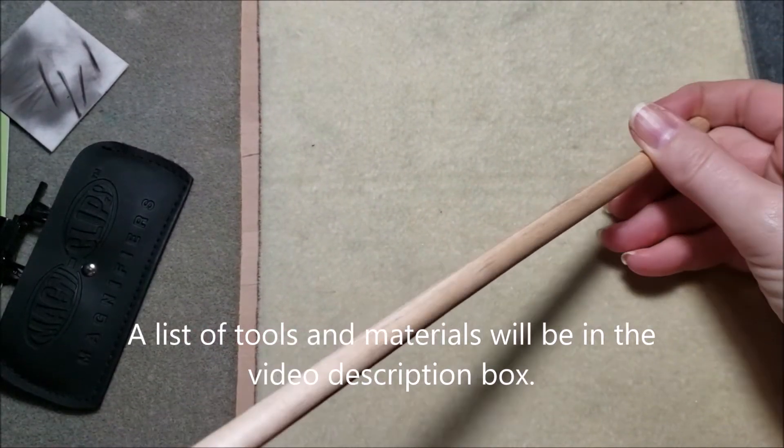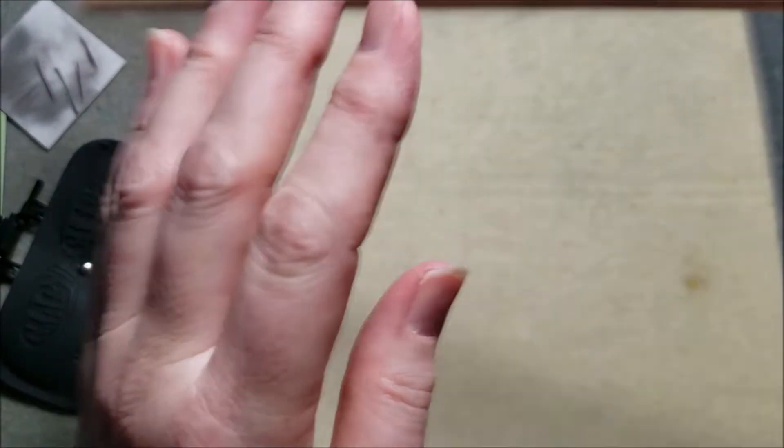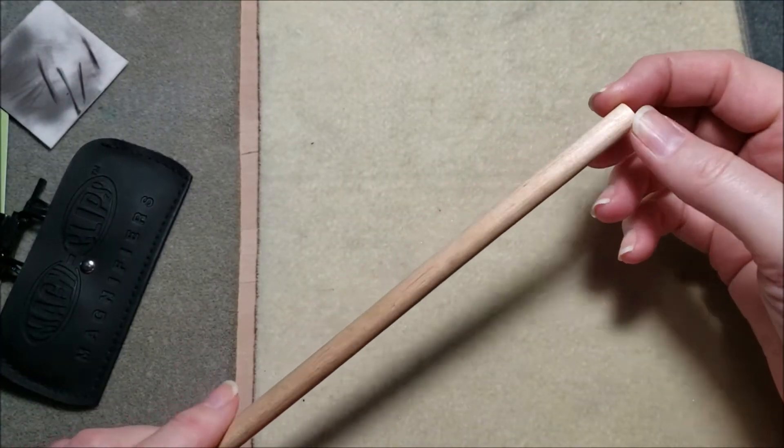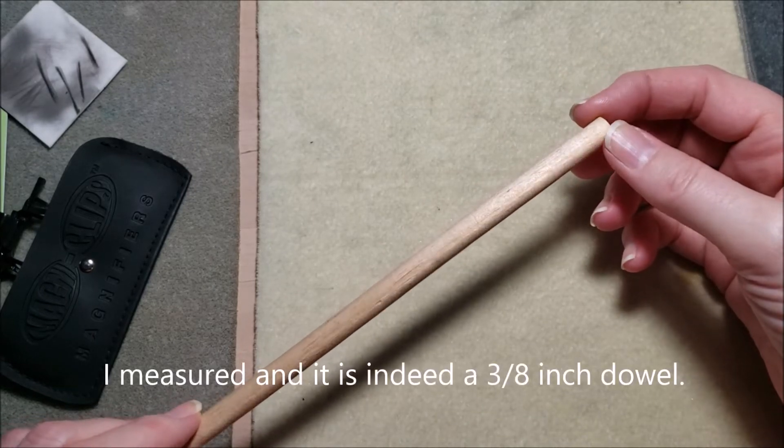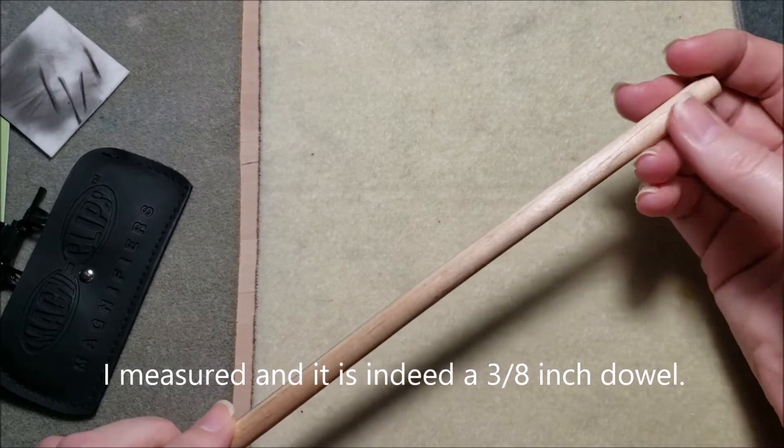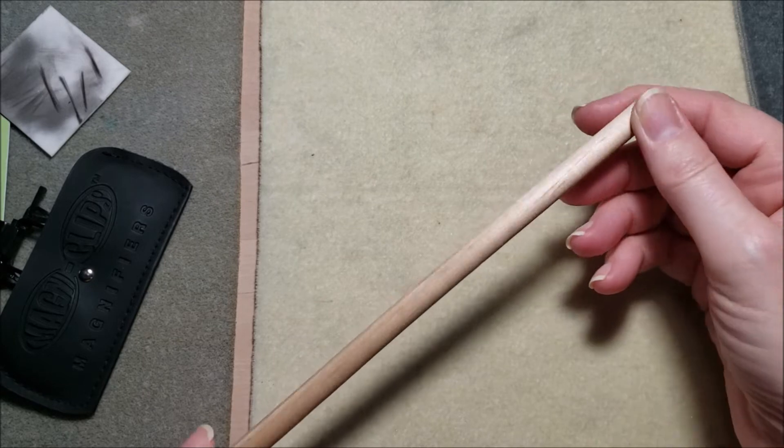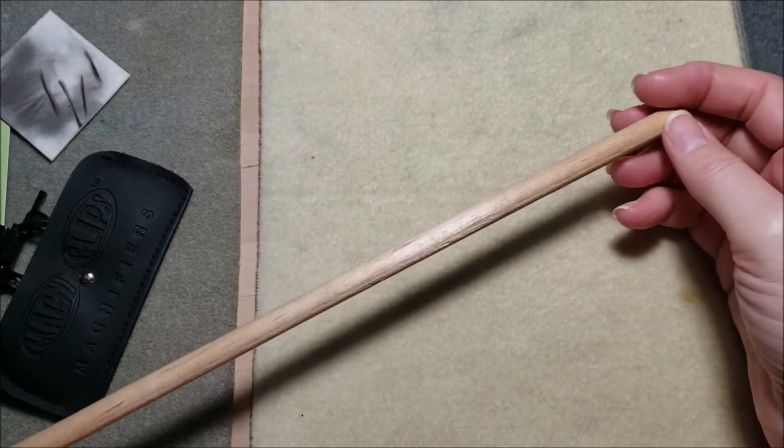I'm going to say that this is probably about a three-eighths of an inch dowel. Might be, I don't think it's a half inch. But you need a dowel that's not too big. I like to have six stitches on my Viking wire knitting.